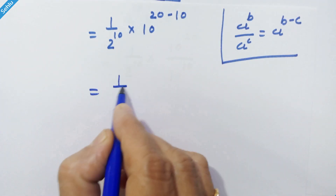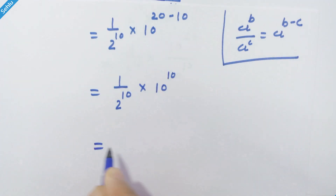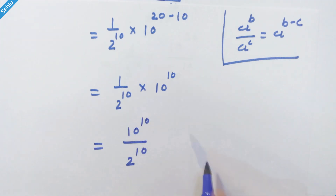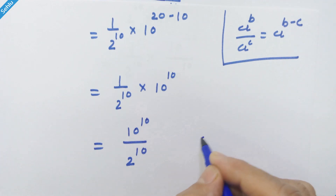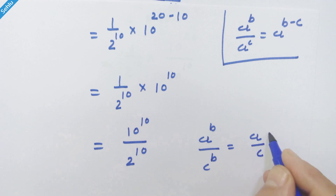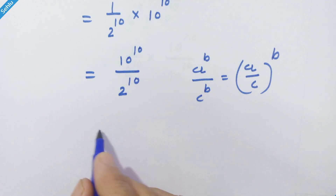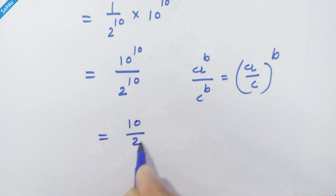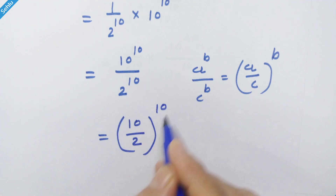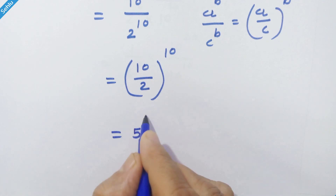So we have 1 upon 2 raise to 10 into 10 raise to 10, which gives us 10 raise to 10 upon 2 raise to 10. Here we apply the rule which says a raise to b upon c raise to b equals a upon c whole raise to b, so we can write it like 10 upon 2 whole raise to 10.